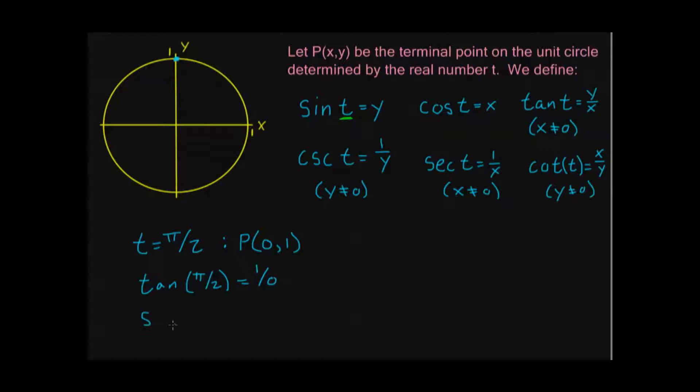And similarly with secant, for the same reason, if I'm looking at secant of π over 2, that's going to be 1 over x. Or in other words, again, 1 over 0. Right? So, I'm not really getting anywhere. This is not defined. So, what does this mean? This means that tangent and secant, both tangent and secant, I'm going to write DNE. That means do not exist. These functions are not defined for x equals 0. Right? And that's what I put up here.